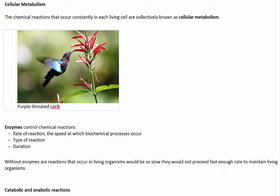Biochemical processes occur and are controlled at the cellular level. The sum of the thousands of chemical reactions that occur constantly in each living cell is known as cellular metabolism. You may have heard of people referring to themselves as having a high metabolism — what they are effectively saying is that biochemical processes in their body, including digestion and processing of food, occur at a fast rate. Rate refers to the speed at which a biochemical process occurs and is controlled by enzymes.